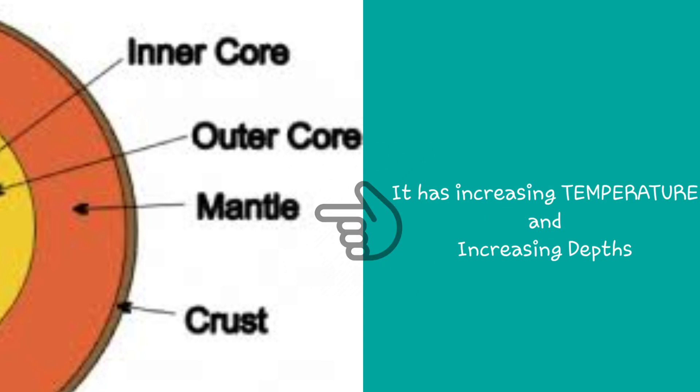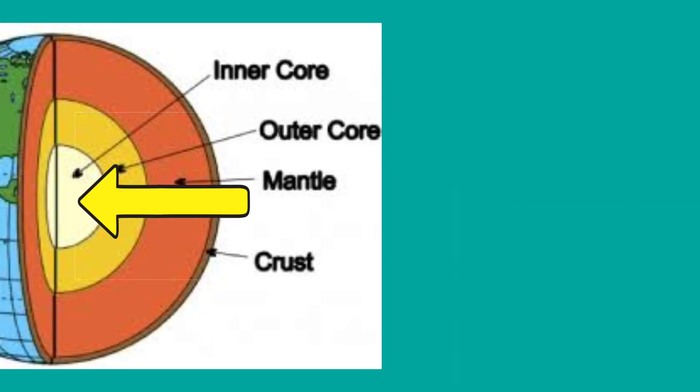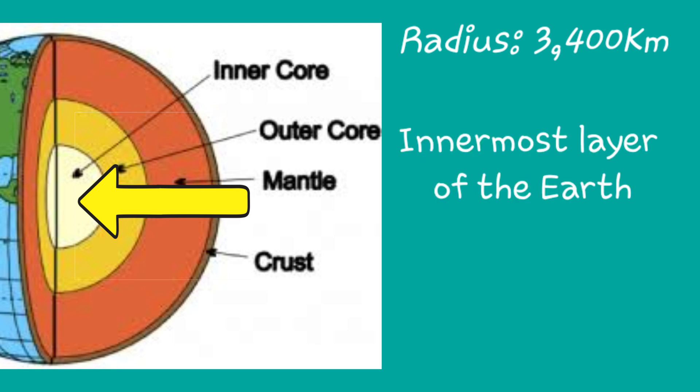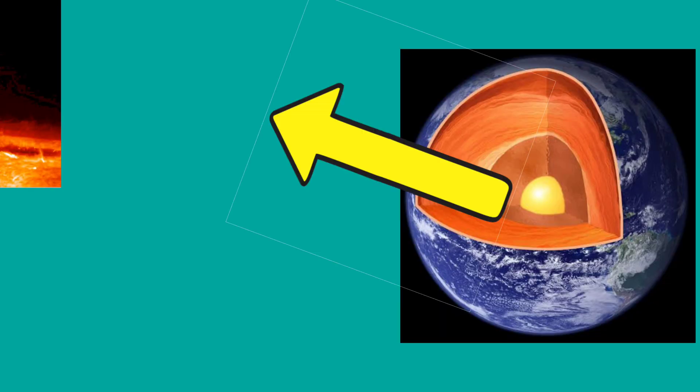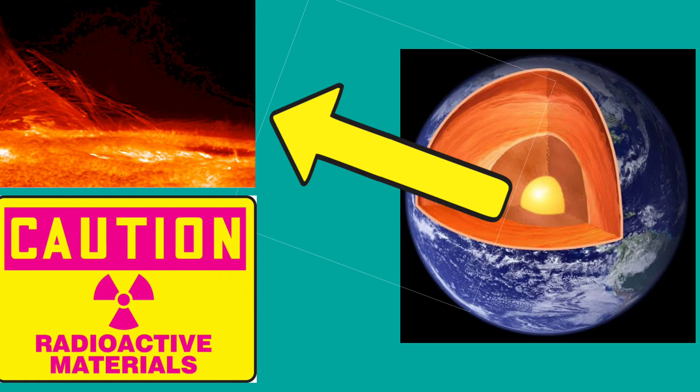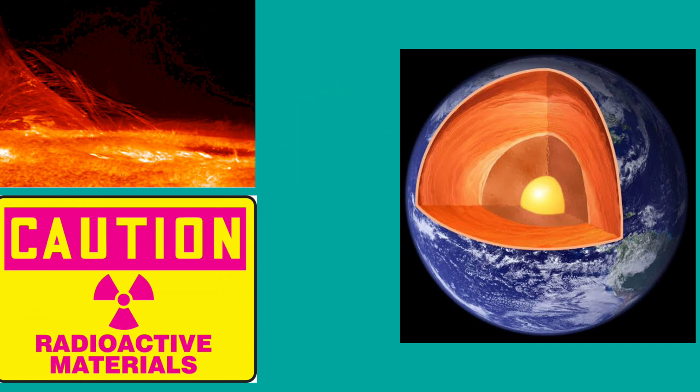The core, which has a radius of 3,400 kilometers, is the innermost layer of the Earth. It is made up of iron and nickel. It is the source of internal heat because it contains radioactive materials that release energy as they decay into more stable substances.